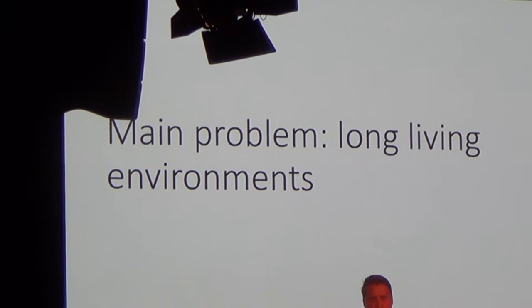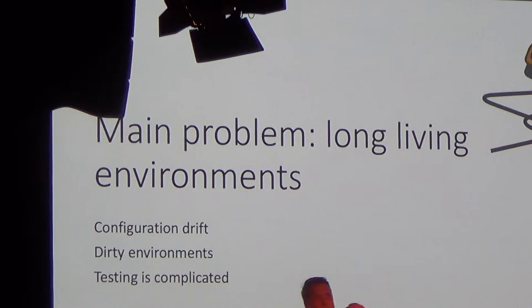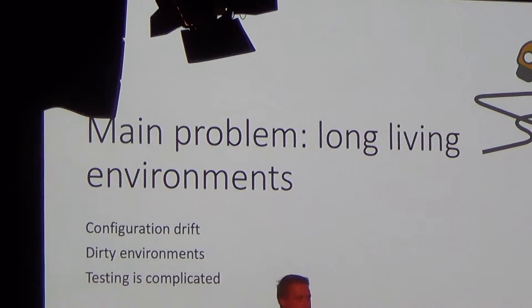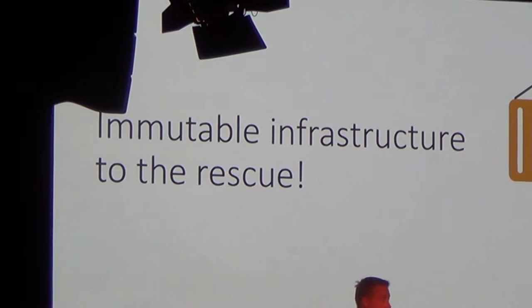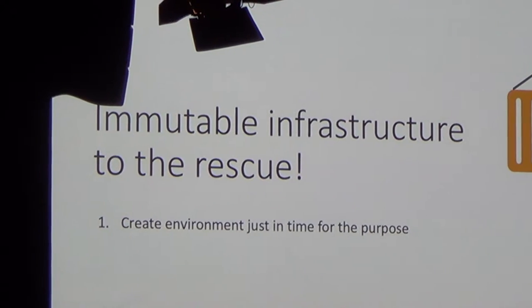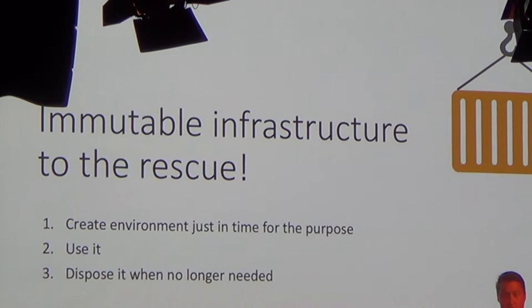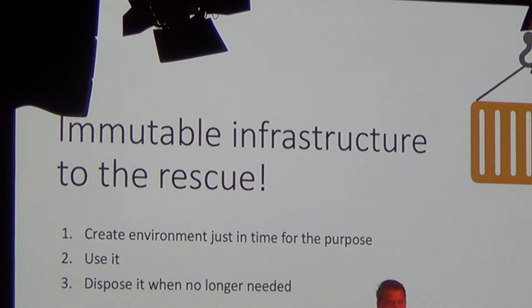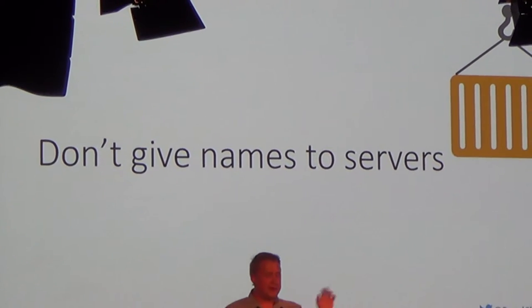The main problem, as I see it, is that these DTAP street environments are long-living environments. They create configuration drift; people change them without documenting. It creates all sorts of problems. And immutable infrastructure seems to solve this issue. How it works: you create an environment just when you need it, for the purpose you need it, you use it, and you dispose of it. It's not yet another cattle versus pets comparison.